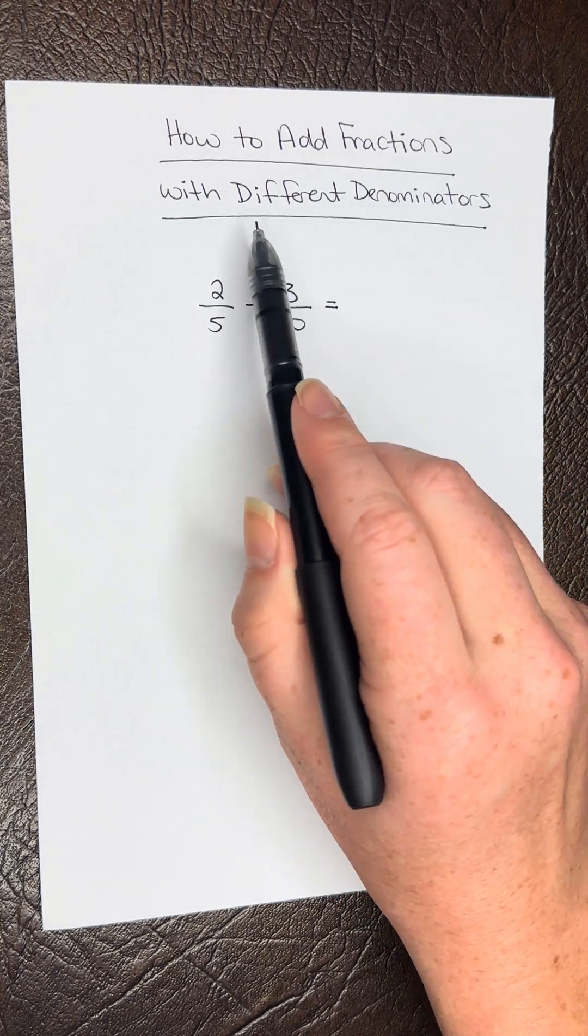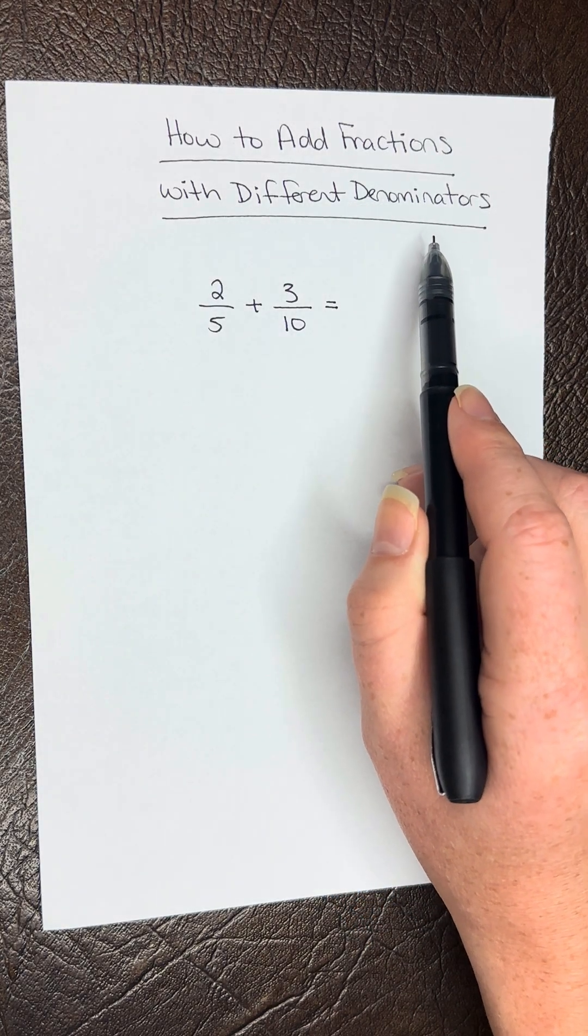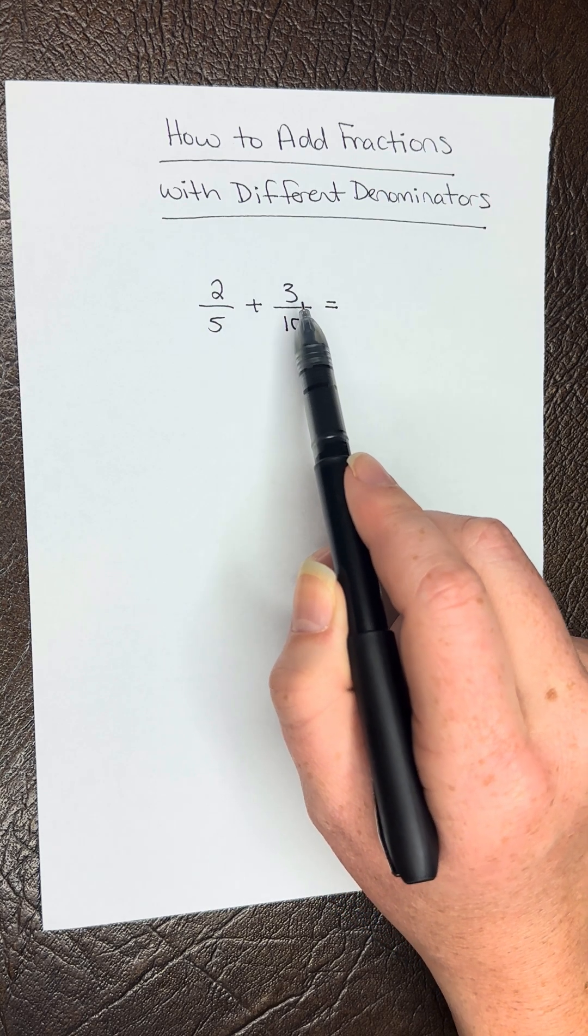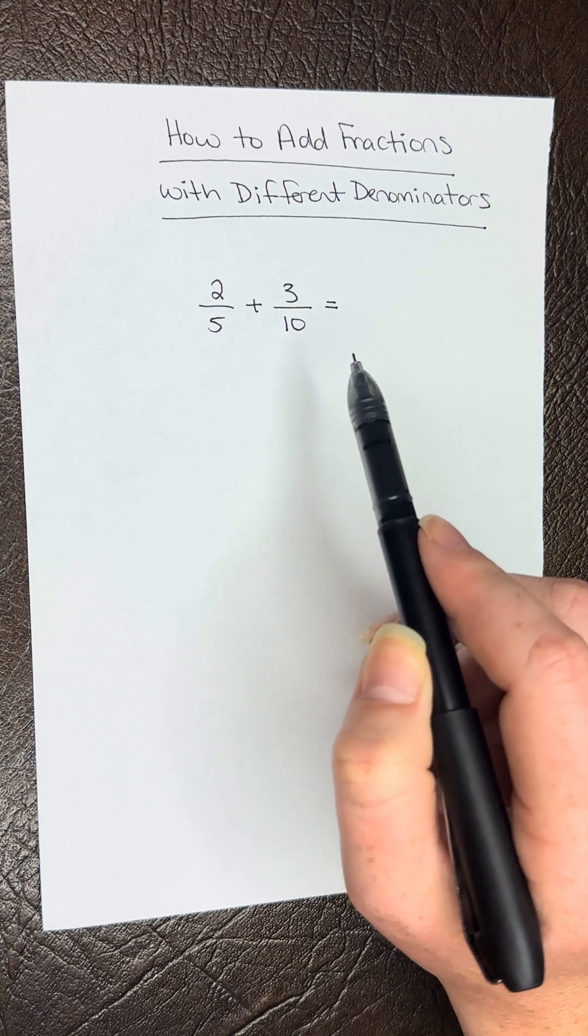Today we're going to learn how to add fractions with different denominators. We have a sample problem here: 2/5 plus 3/10 equals what?